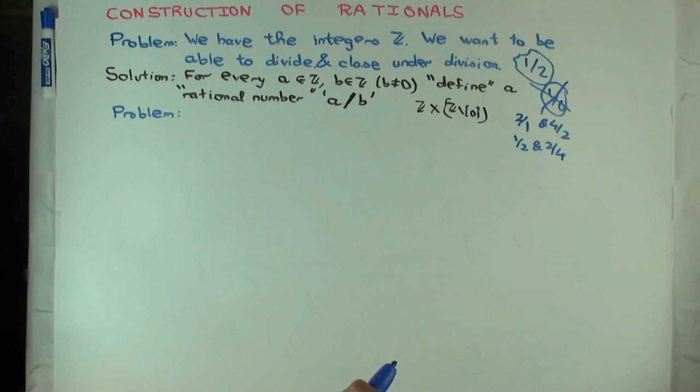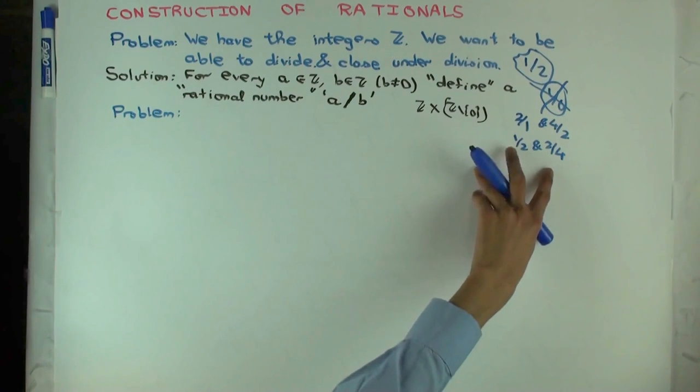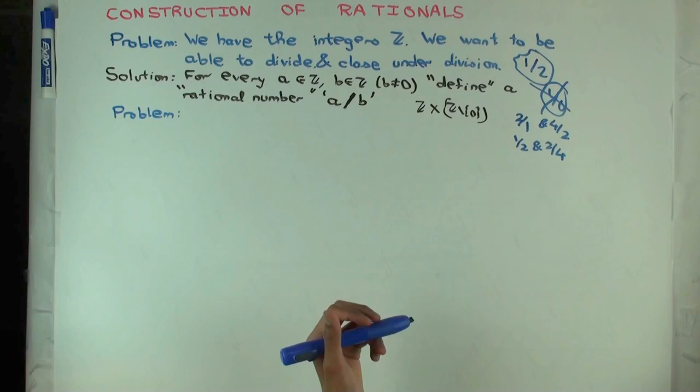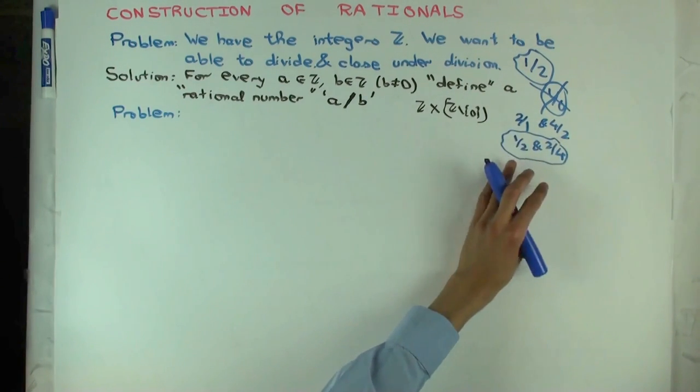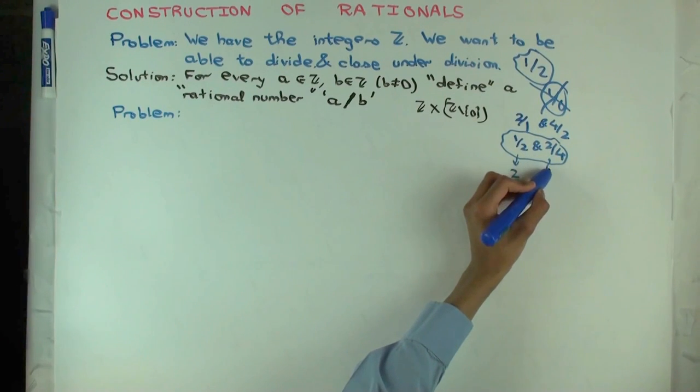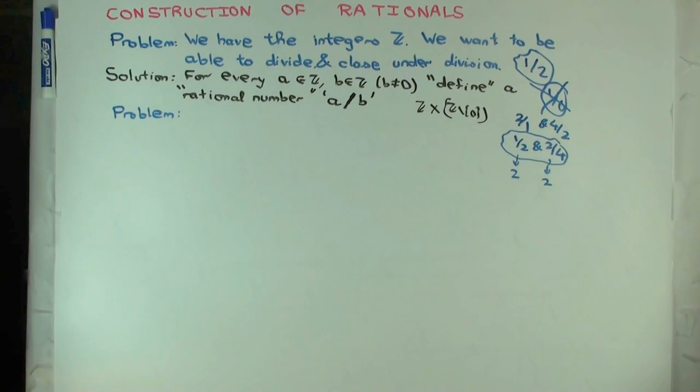Which means in part we want that when a and b are integers, if a over b happens to actually be an integer, then we should just want it to actually be that integer. So 2 over 1 and 4 over 2 should be equal. But there's a little more to it. If I give you 1 over 2 and 2 over 4, since you've done a lot with rational numbers in school, you know that these are actually equal as numbers. But in a more abstract sense, why are they equal? That's a little trickier to capture.